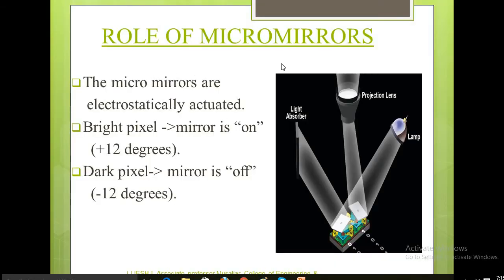The micromirrors are electrostatically actuated. The bright pixel mirror is in the on position, that is plus 10 to 12 degrees, and the dark pixel indicates the mirror is in the off position, which is minus 10 to 12 degrees.